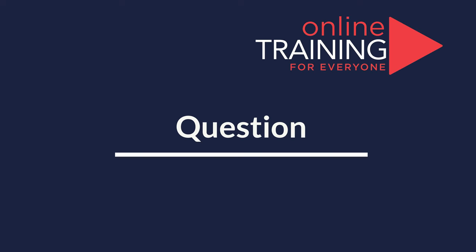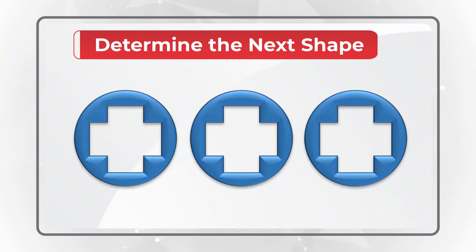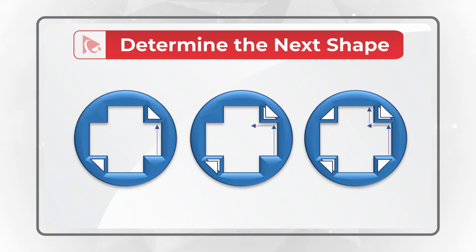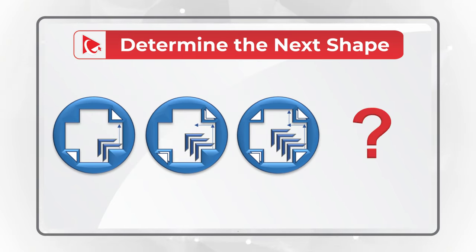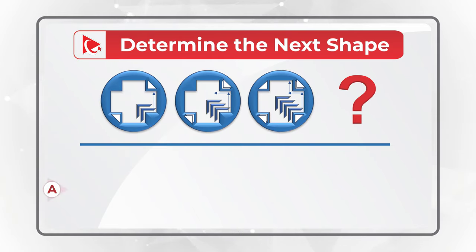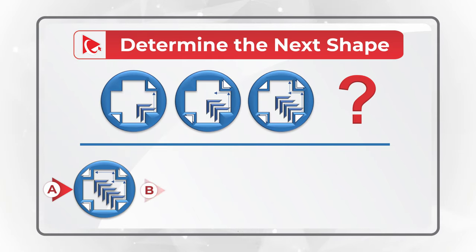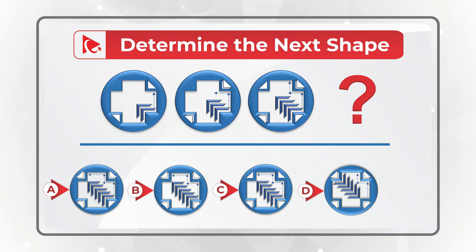Here is an amazing question where you need to find the next shape in the sequence. You are presented with a series of circles of different configurations, with a variety of different shapes inside. You have 4 different choices: A, B, C, and D. Take a close look to see if you can come up with the solution.